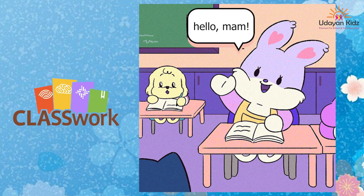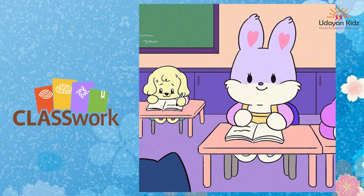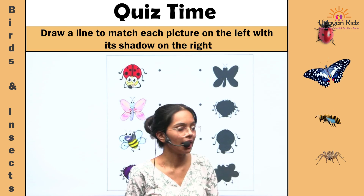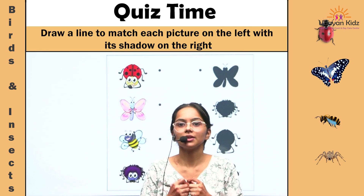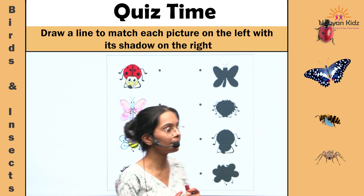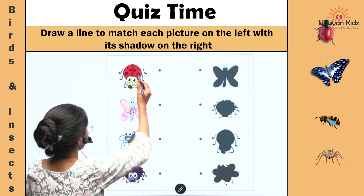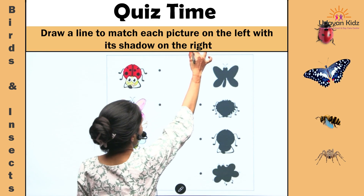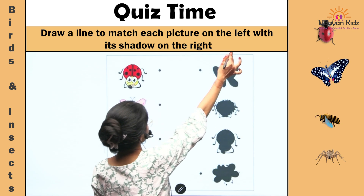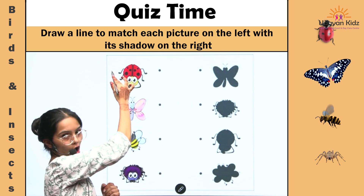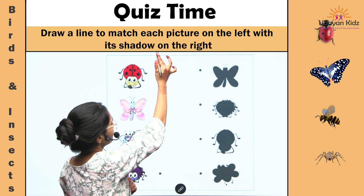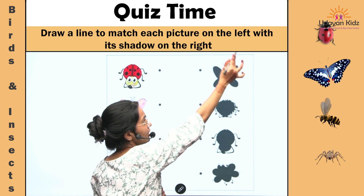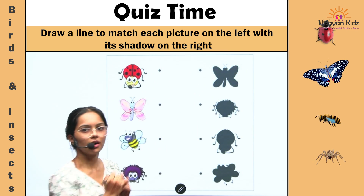Now it is classwork time. Let's solve the question. Now it's quiz time. Throw a line to match each picture on the left with its shadow on the right.